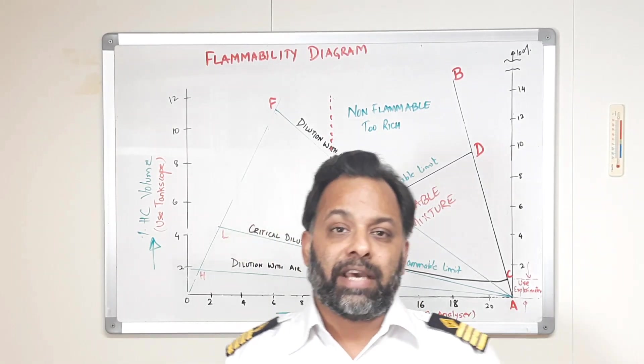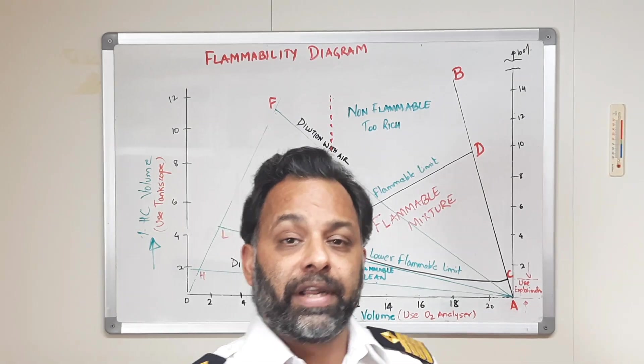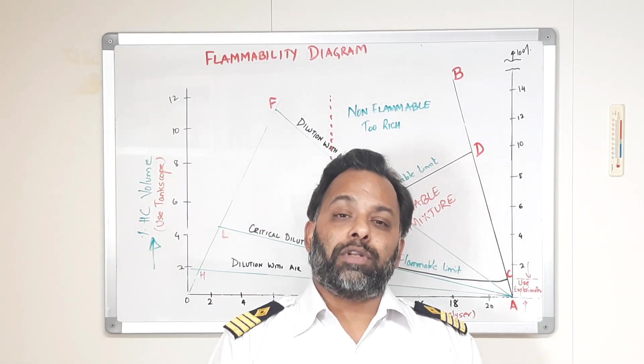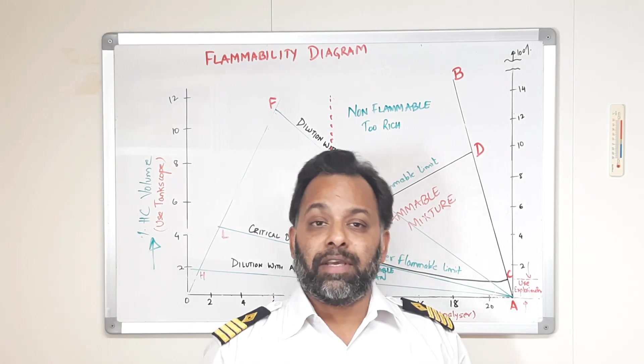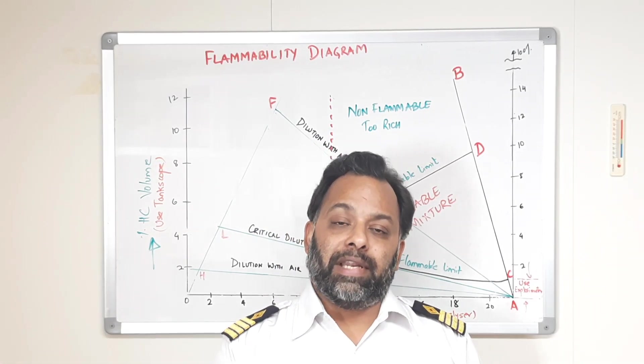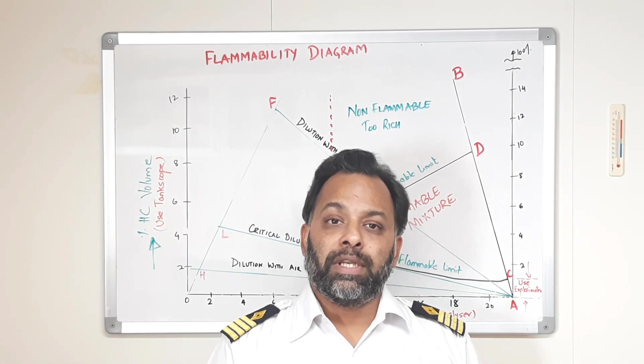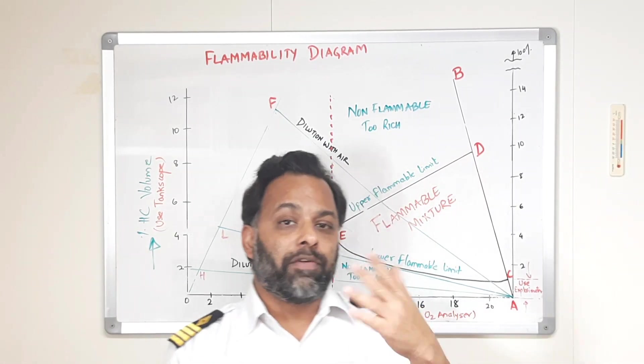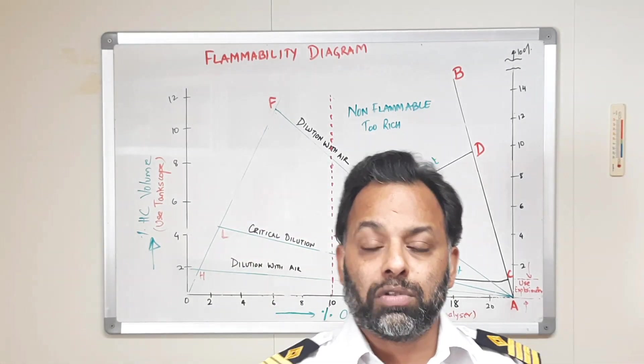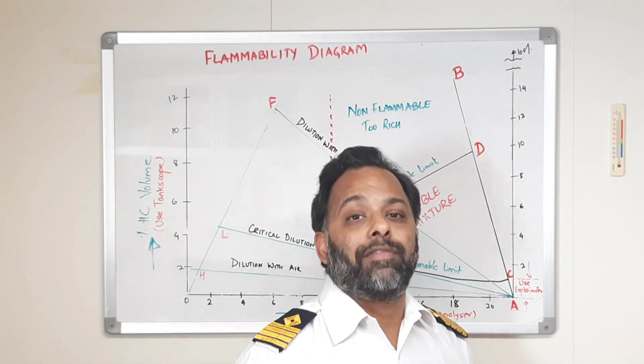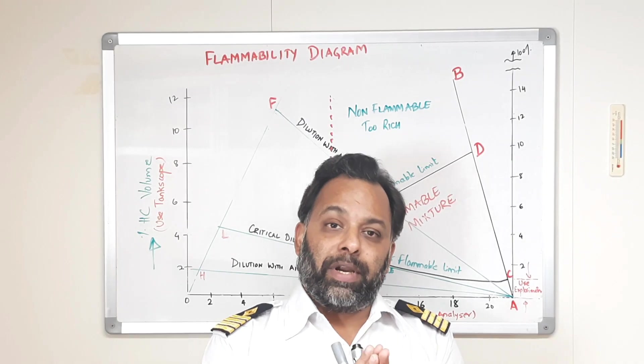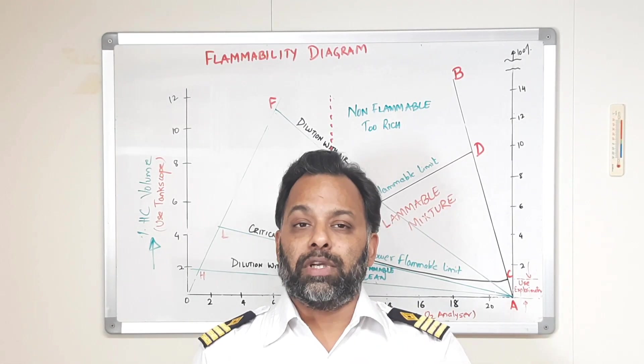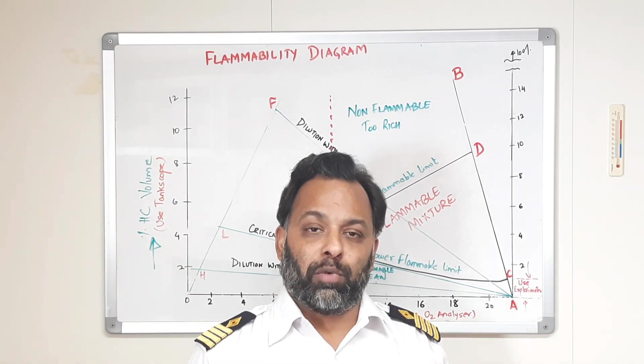We have inert gas generators, we have inert gas systems through which we put that inert gas into the atmosphere which contains less than 5% of oxygen and hence we take away one element of this fire triangle. Instead of inert gas we sometimes also use nitrogen gas. We have nitrogen generators wherein we generate, we separate nitrogen from air and we supply this nitrogen to the tank.